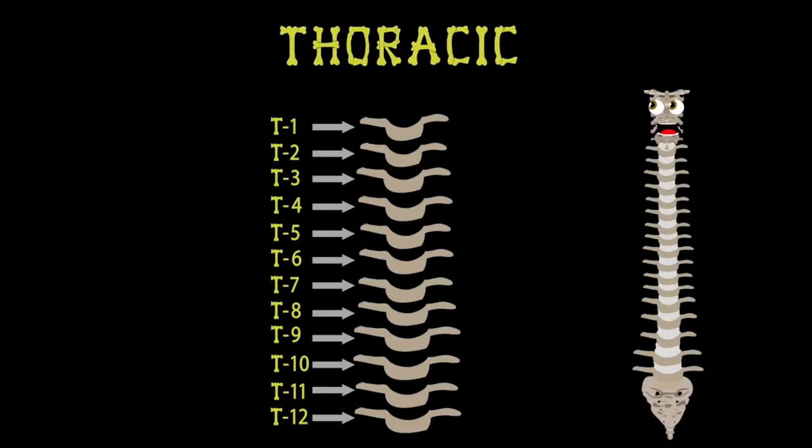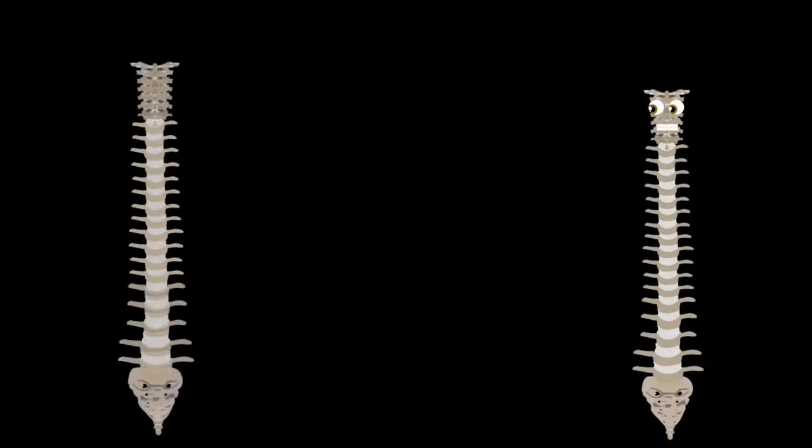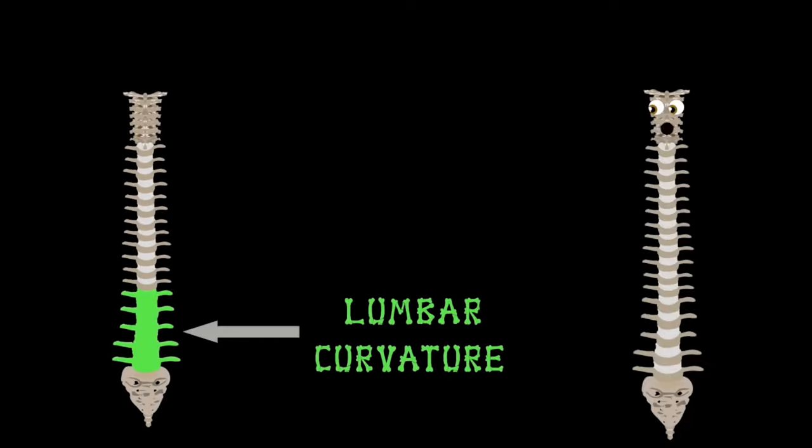T1 through T12 are bigger than the group in your neck, because the spine supports more weight the further down we check. At the bottom of this group begins the lumbar curvature.